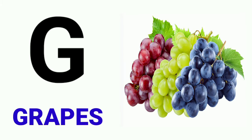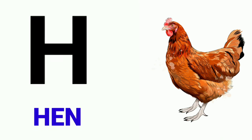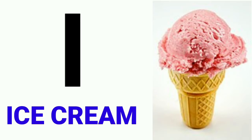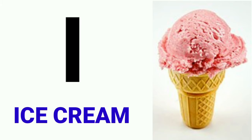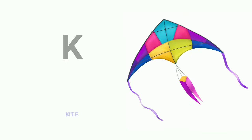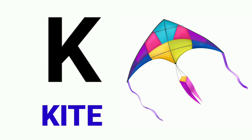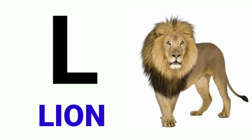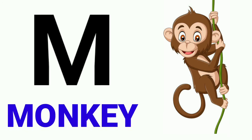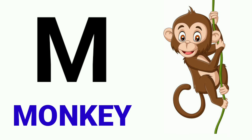G for crabs, H for hen, I for ice cream, J for jug, K for kite, L for loin.